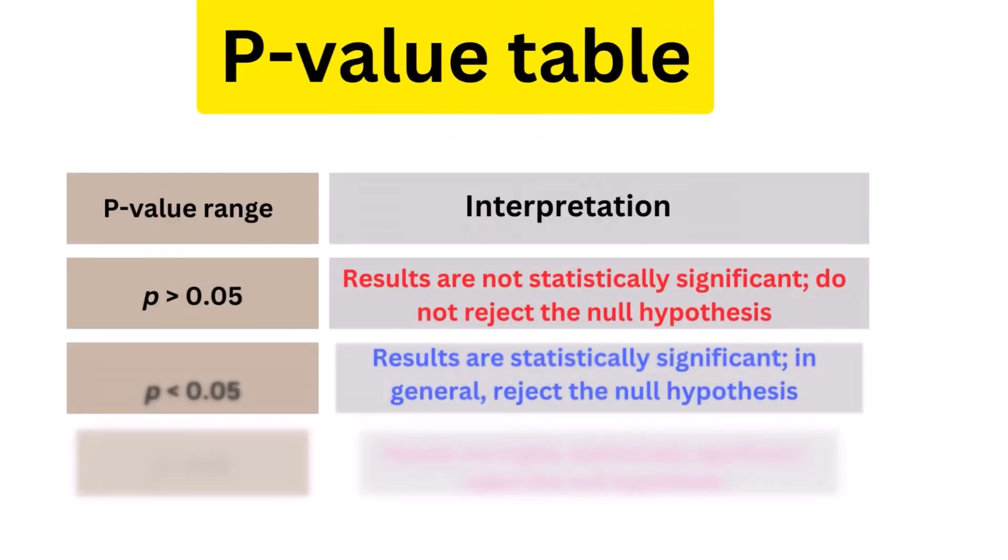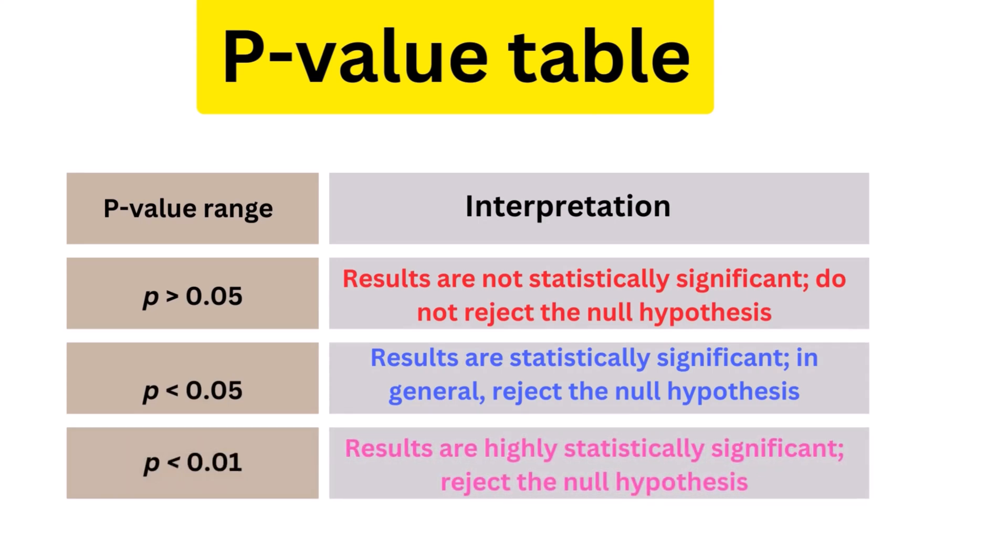How can we interpret the p-value results of an experiment or trial? A p-value table, prepared prior to the experiment, can sometimes be helpful. This table lists possible p-values and their interpretations.